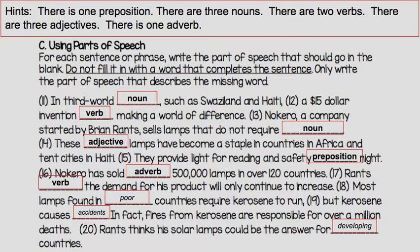'Most lamps found in poor countries require kerosene to run' — poor is describing countries, that means adjective. 'But kerosene causes accidents' — accidents is a thing, so that's a noun. 'Rance thinks his solar lamps could be the answer for developing countries' — developing describes the kind of country, kind of noun, that means adjective.